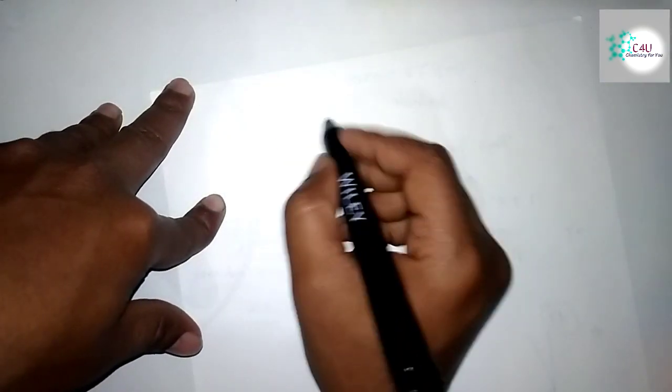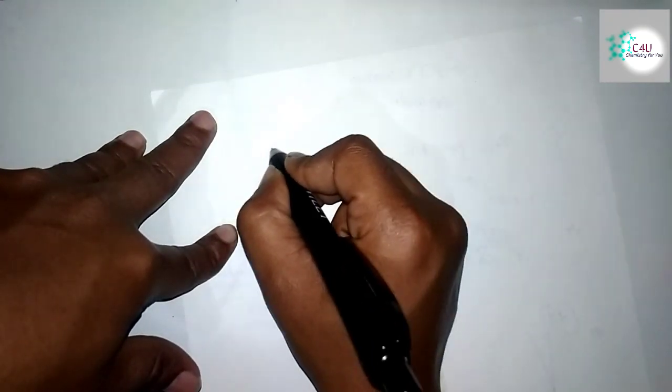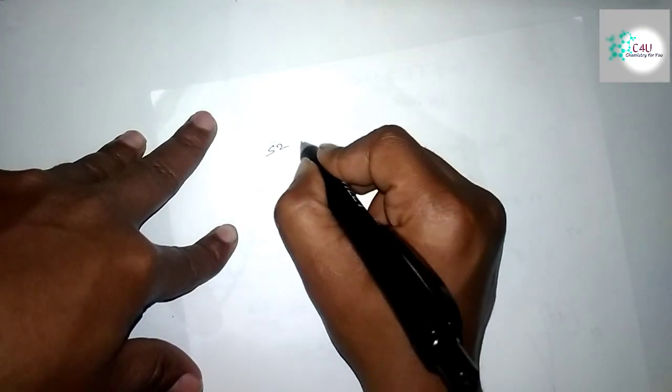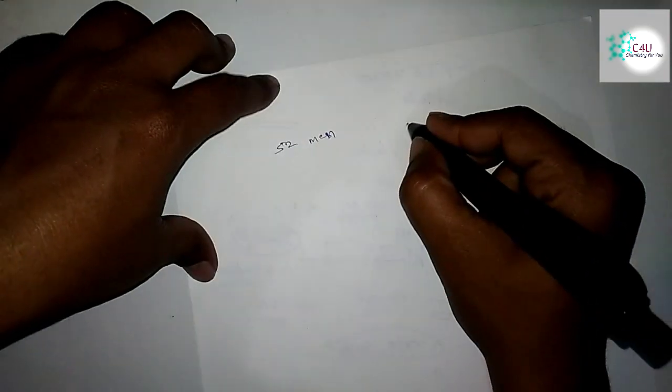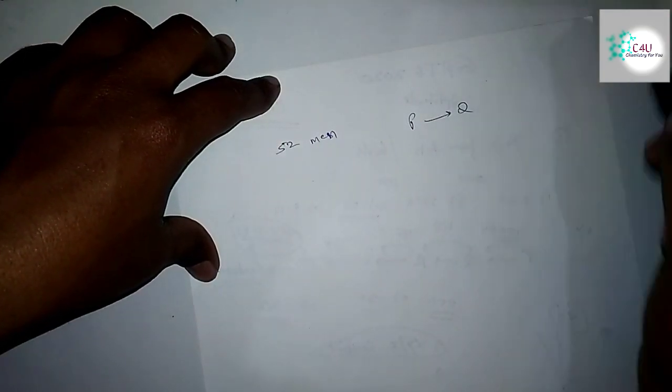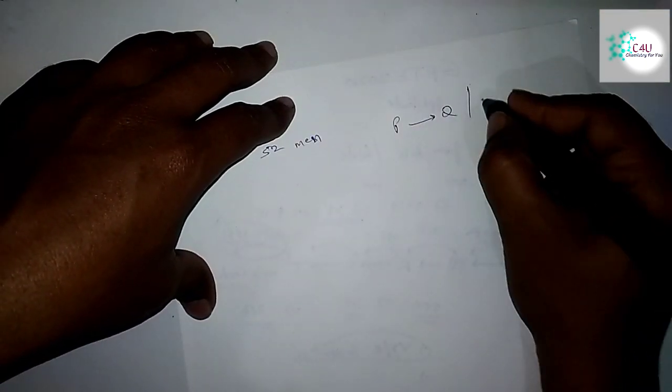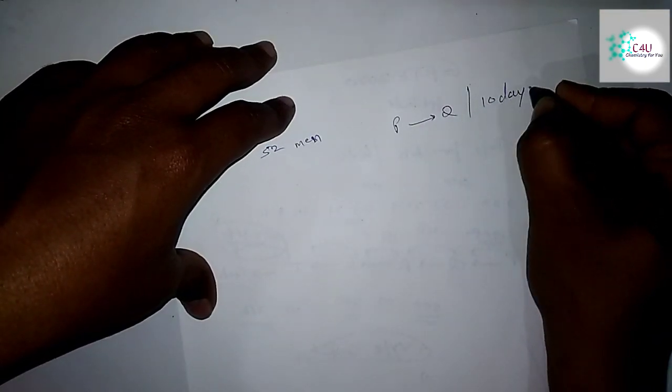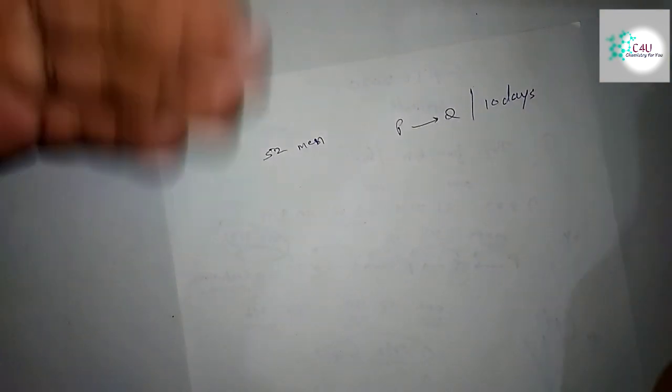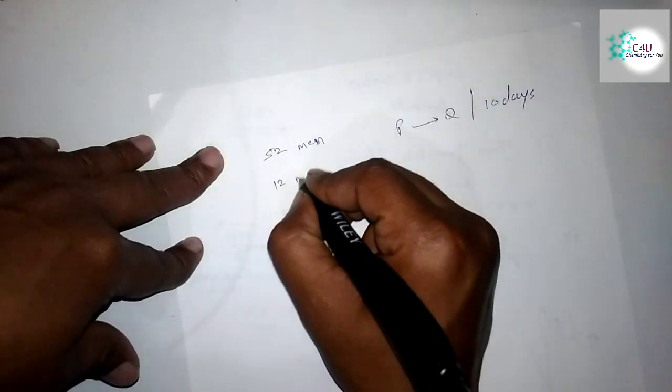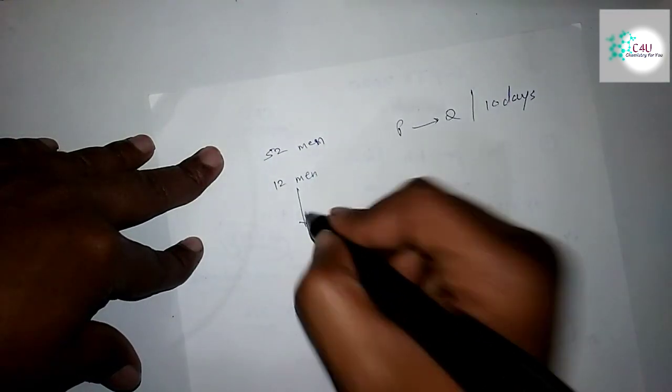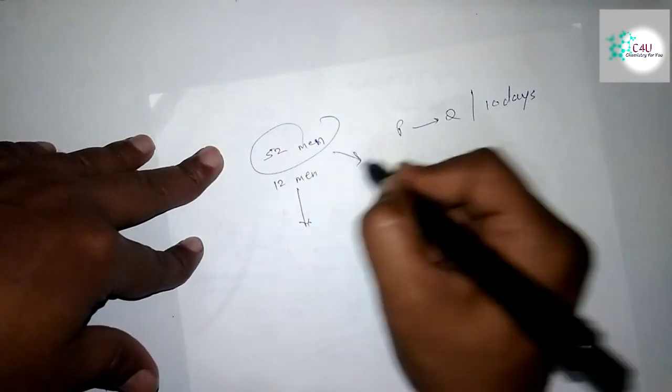There was one more interesting calculation question. If 52 men were engaged in building one strip of highway from point P to Q, and they required an estimated time of 10 days, but due to some emergency 12 men were shifted to another work, that means now you're with only 40 men at the work.